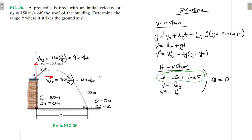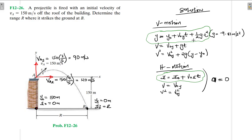Let's use the vertical equation to find the time. Plugging in all values: y_final is zero, y_0 is 150, v_0y is 90, g is minus 9.81 meters per second squared. We have everything except t, so we can solve for t.